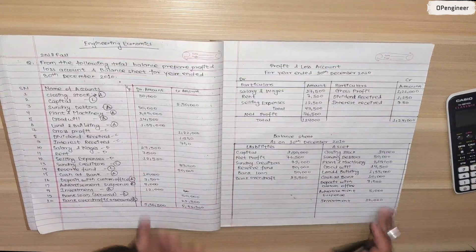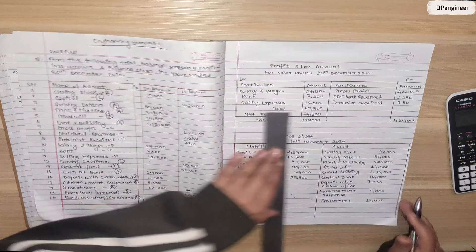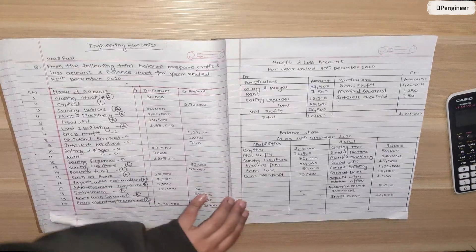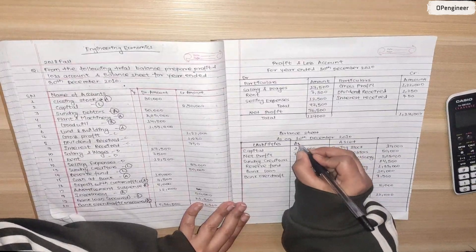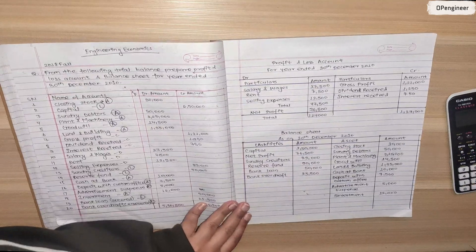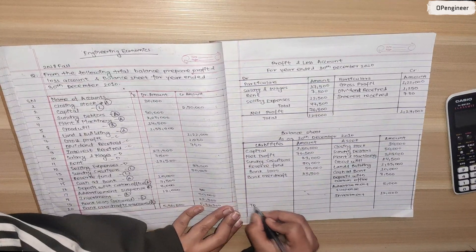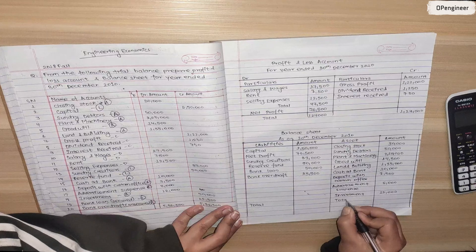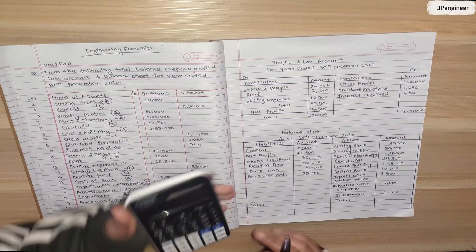So these are the liabilities and assets. I will now apply the totals. The total amounts from each column will be applied. Let me calculate the totals for both sides.